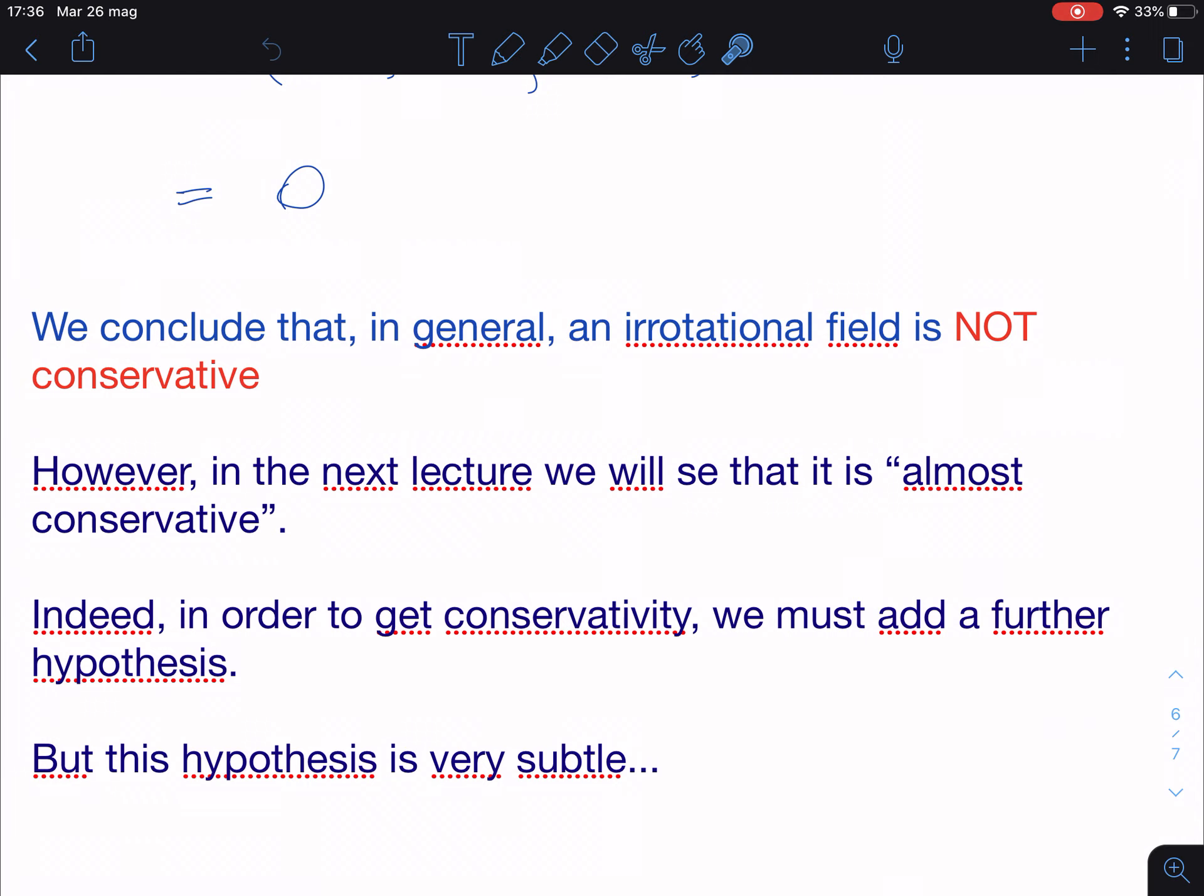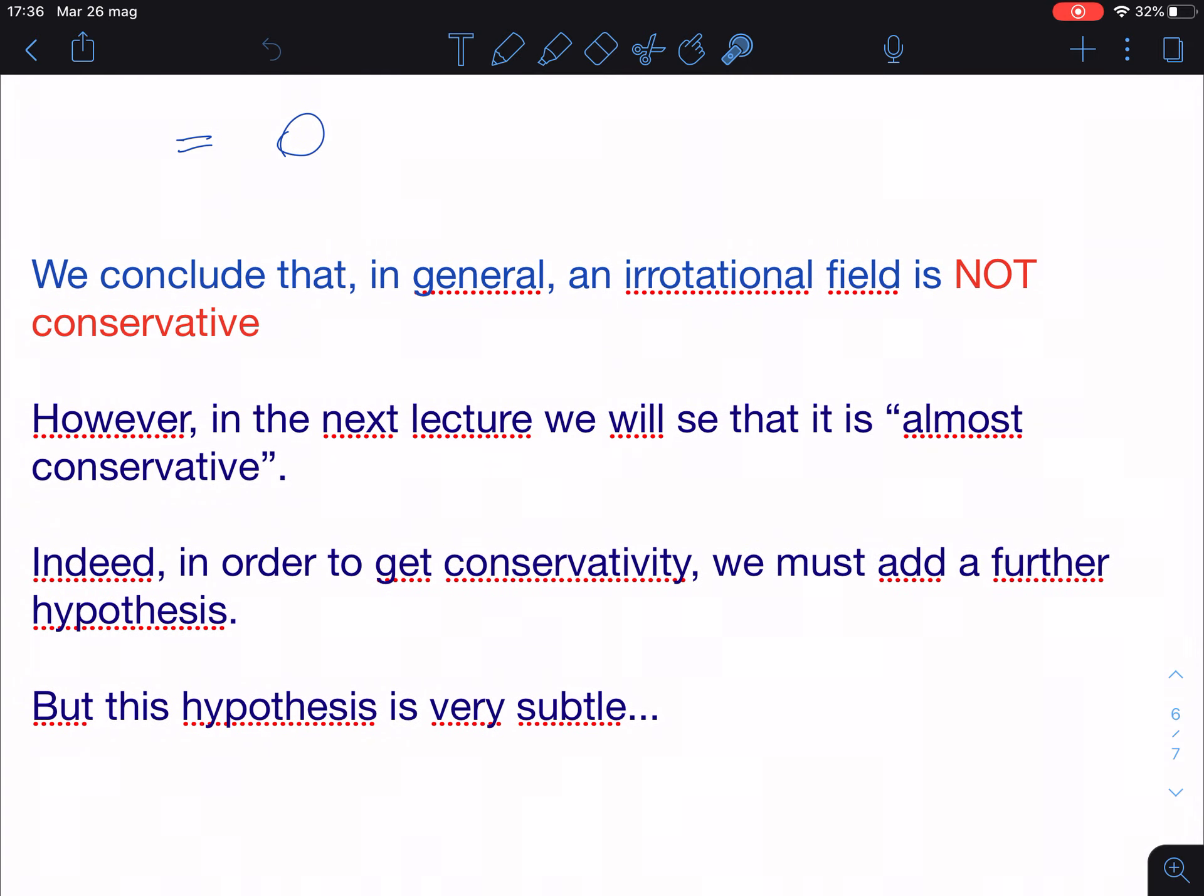And now I promised you to show you that however, irrotationality is very close to conservativity. So I wrote that it is almost conservative. This is not a mathematical statement, almost conservative, but I think it gives the correct idea. There is something missing, but this something that is missing is not so much and not so deep. But indeed, to get conservativity, we must add a further hypothesis, and this hypothesis turns out to be very subtle.